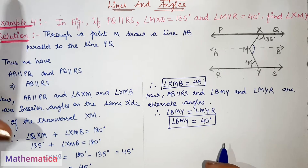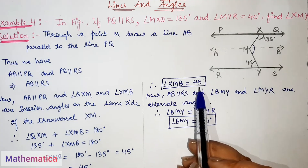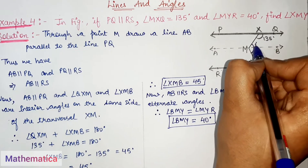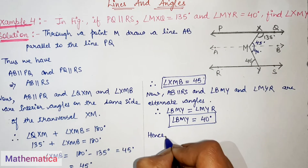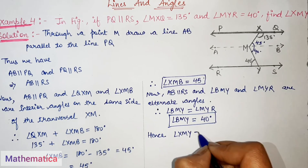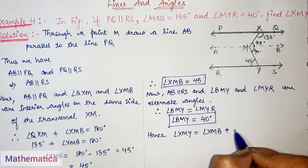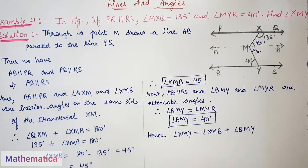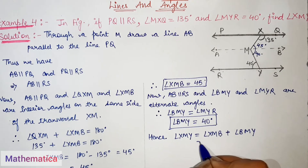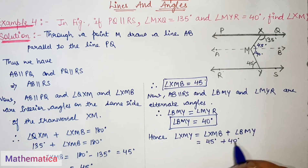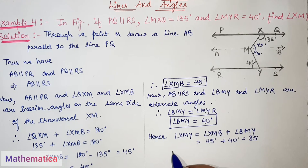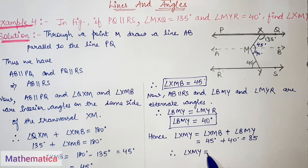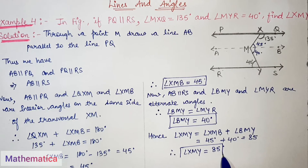Now we have both angles — angle XMB is 45 degrees and angle BMY is 40 degrees. Hence, angle XMY equals angle XMB plus angle BMY, which is 45 degrees plus 40 degrees. Therefore, finally, angle XMY is equal to 85 degrees.